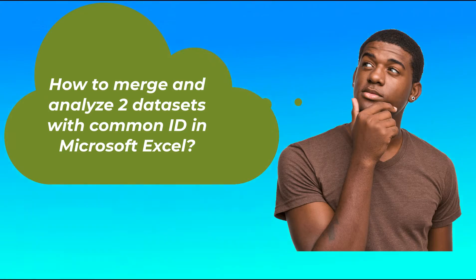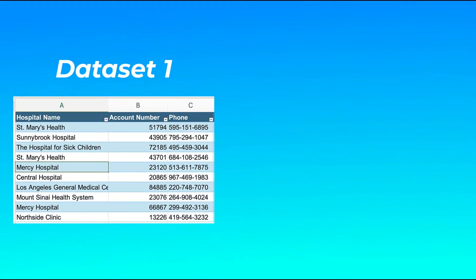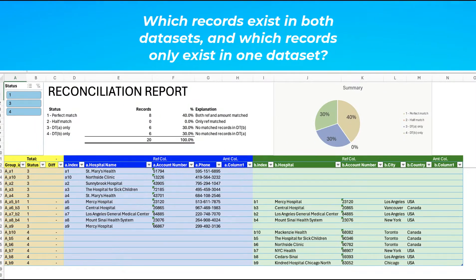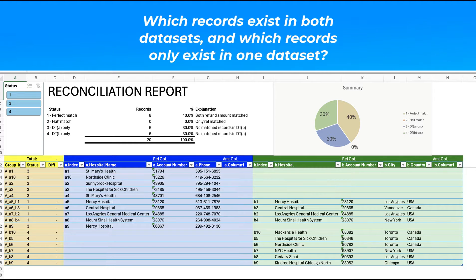Suppose we have two datasets. The first dataset contains columns for hospital name, account number, and phone, while the second dataset contains columns for hospital, account number, city, and country. Our goal is to generate a report that connects rows from these two datasets by account number if they match. If an account number exists only in one dataset, we will mark it for further review. This technique is essential for anyone looking to consolidate and analyze data efficiently.